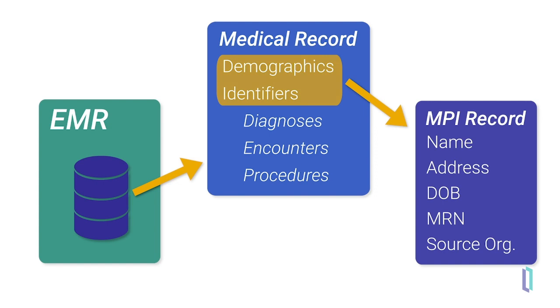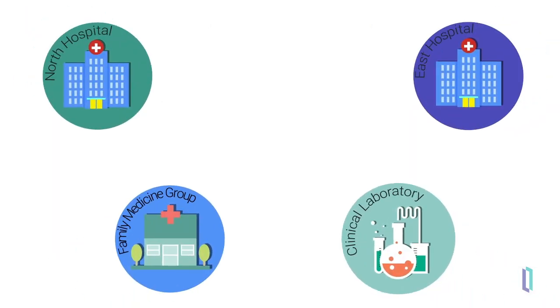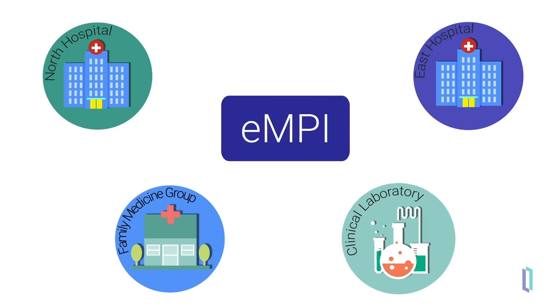The MPI links the identifiers for an individual based on an examination of the demographic data from those records. While each data source could have its own Master Patient Index, an Enterprise Master Patient Index, or EMPI, connects all facilities in a network.